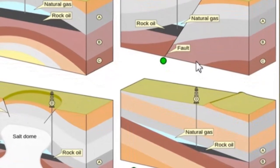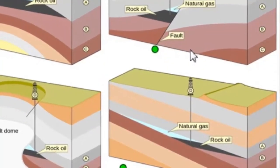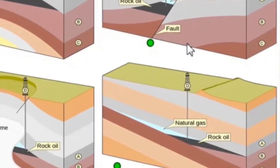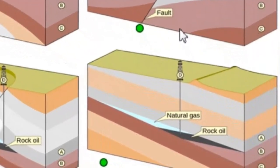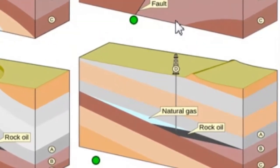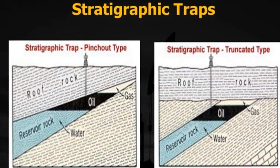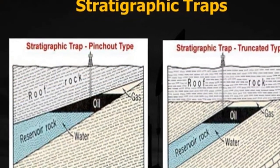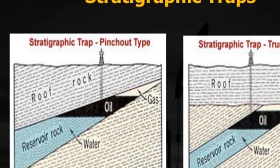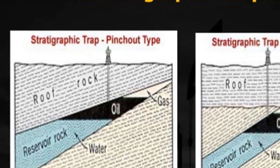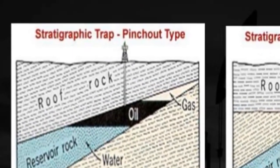Yet another important geologic circumstance that may lead to significant accumulations of oil and gas is termed a stratigraphic trap. These oil-bearing structures result primarily from the original pattern of sedimentation rather than structural deformation. The stratigraphic trap exists because of a sloping bed of sandstone that thins to the point of disappearance.